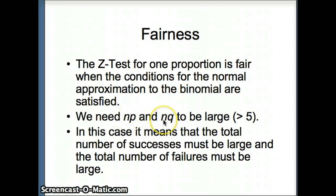Similarly, N is the number of trials, and Q is the probability of failure on a given trial, so NQ is the number of failures. So if we're going to use this model, we need the number of successes to be large, and the number of failures to be large, and we usually want it to be at least 5.